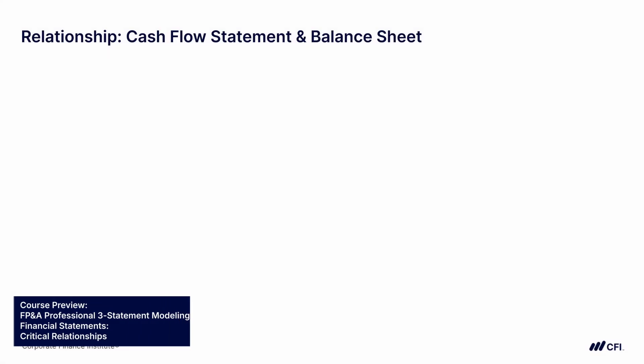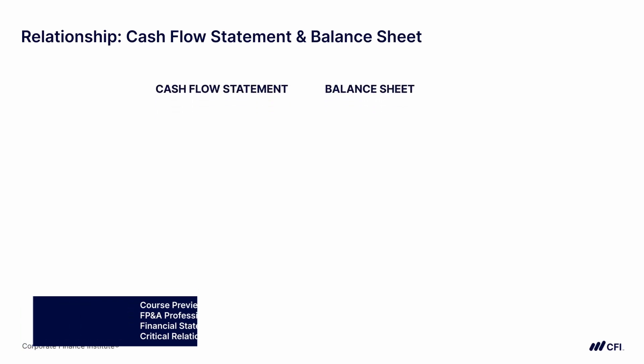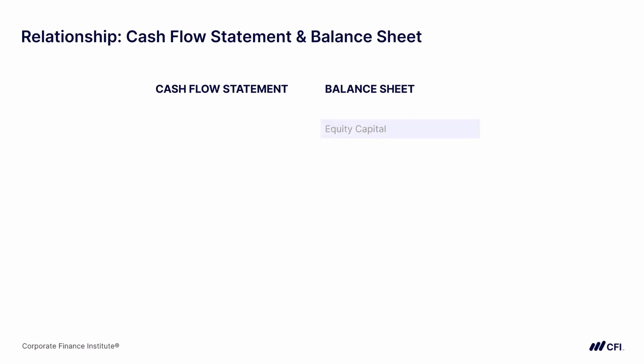By far the most important takeaway from this module, and in fact from this course, is to understand the relationship between the cash flow statement and the balance sheet. If we see a line item on the balance sheet for equity capital, we should also see a corresponding line item on the cash flow statement for equity issuance or buyback. If there are any changes to equity capital on the balance sheet, we should see the cash impact of those changes through the equity issuance line on the cash flow statement.